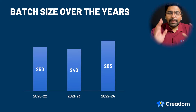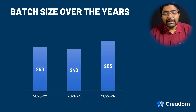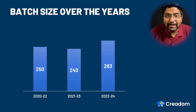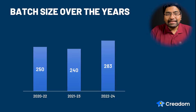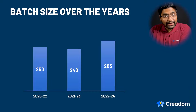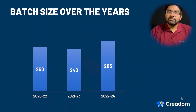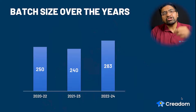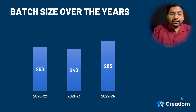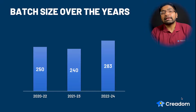The batch size has remained similar — I've shared this so you know approximately what the batch size is. One very interesting thing from this slide: this is one of the lowest batch sizes across IIM A, B, C, L, K, I, and S, and also across the newer IIMs. Wherever you place IIM Shillong, this batch size is a very small number, since almost all others have 300+, 400+, some even 500+. That is a great advantage you get at IIM Shillong.